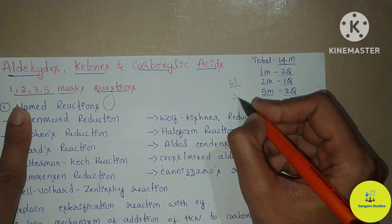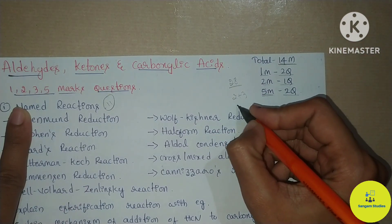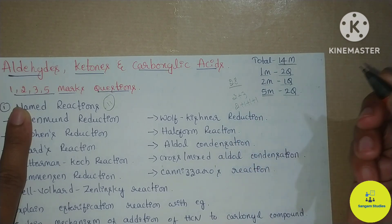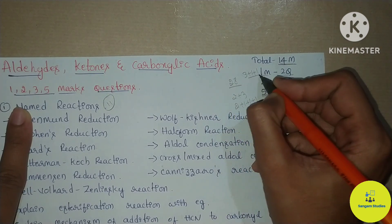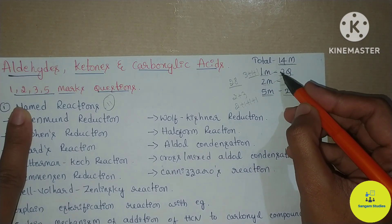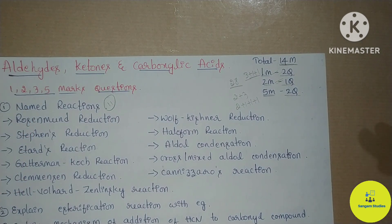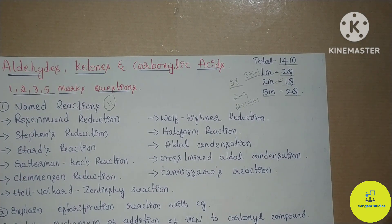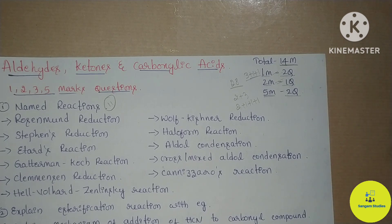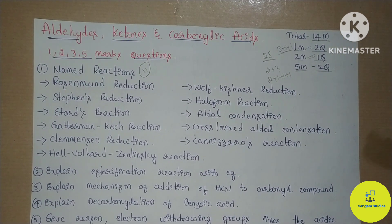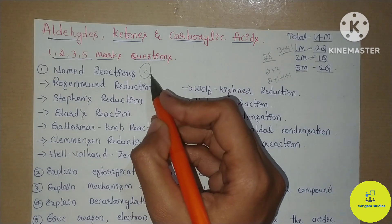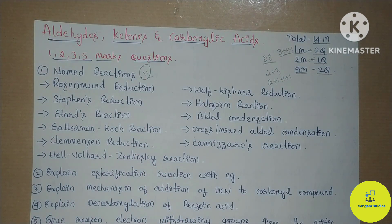I'll tell the entire question. The 2-mark and 3-mark questions will be expressed as well. The 1-mark or 2-mark overlap will be addressed. I will tell you the 1, 2, 3, and 5 mark important questions. In this chapter, the main important reactions total 11 reactions. First, you have to study these reactions.